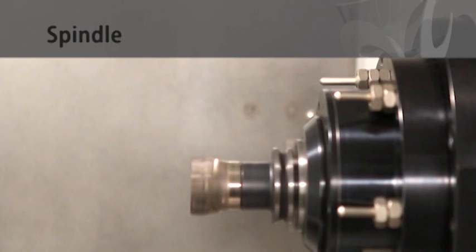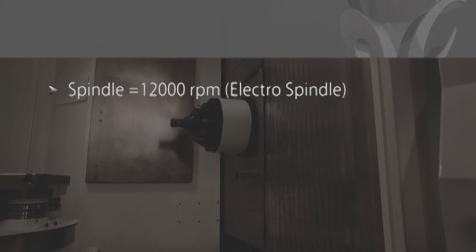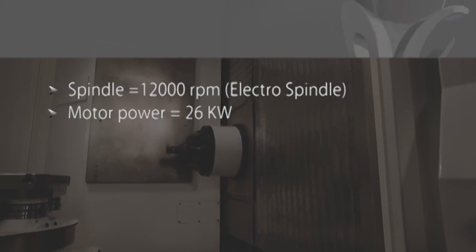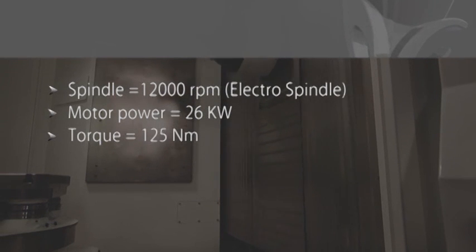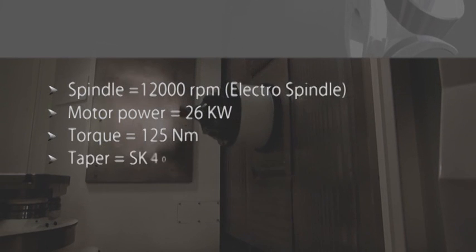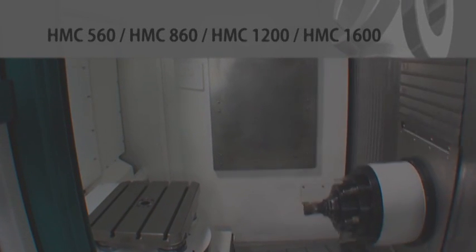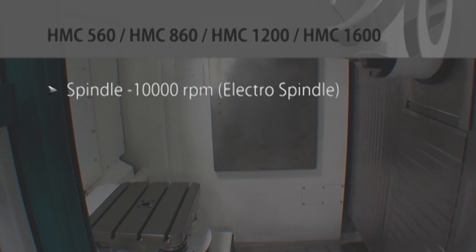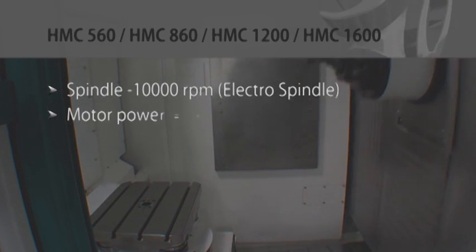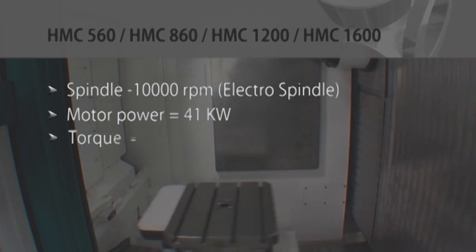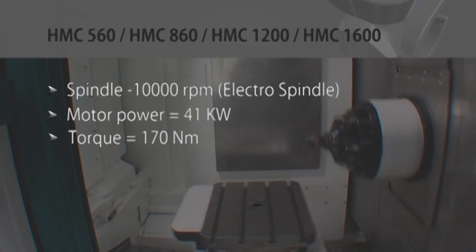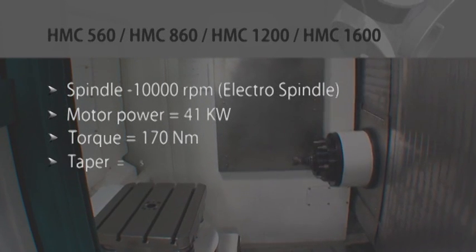Spindle: HMC 450 is equipped with 12,000 RPM, 26 kilowatt, 125 newton meter high torque built-in spindle motor with SK40 taper.